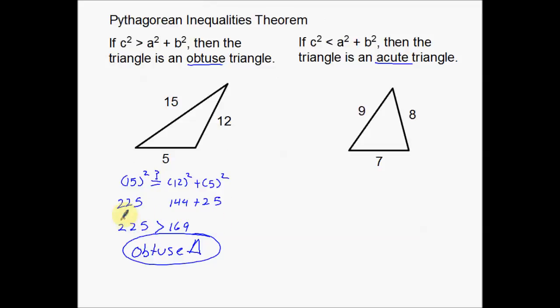Well, it means that this side with the 15 is too big, that means that this side is too big, it creates a big angle over here, it creates an obtuse angle, so we have an obtuse triangle.